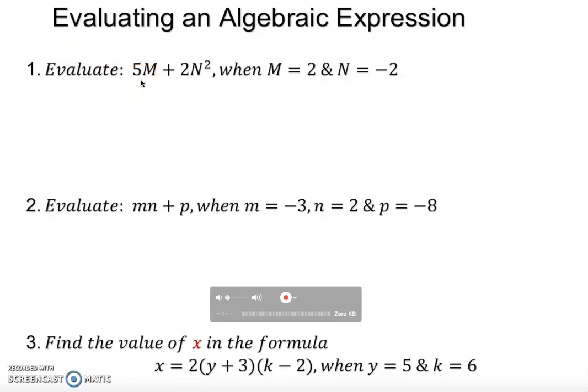Let's talk about how we can evaluate an algebraic expression. So 5m plus 2n square, this is an expression and of course this is not an equation. Why? There is no equal sign.